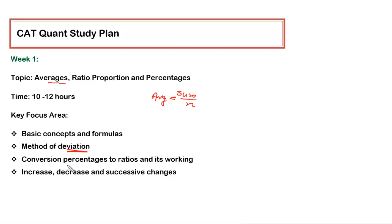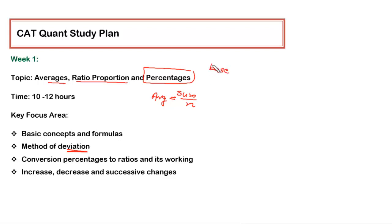For ratio and proportion, you need a basic understanding of ratio, proportion, continuous proportion, mean proportion, and related concepts from school days. The most important among these three topics is percentage, because it has a huge application in every type of topic within arithmetic.